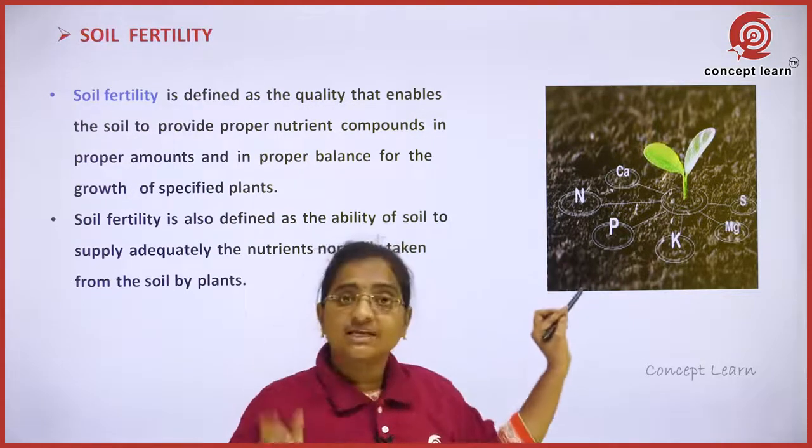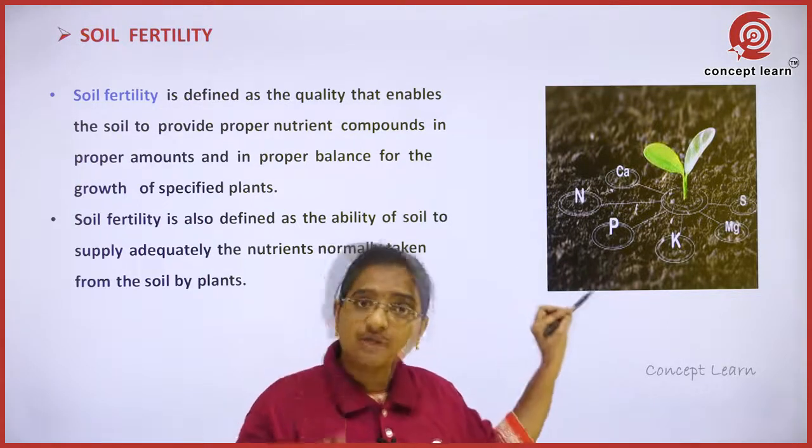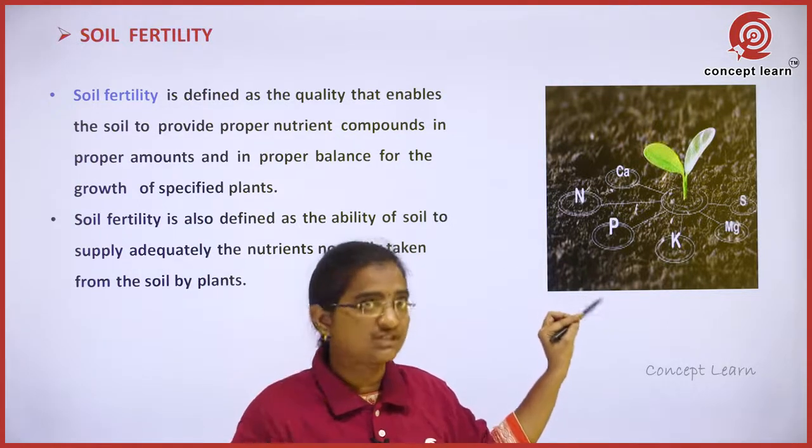For example, N, P, K are required in large amounts, so the soil must be able to supply them in large amounts. Micronutrients are required in very small amounts, so the soil must supply them in correspondingly small amounts. If it cannot do so, we cannot call it a fertile soil.